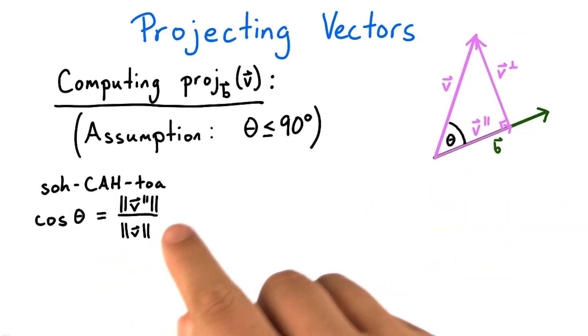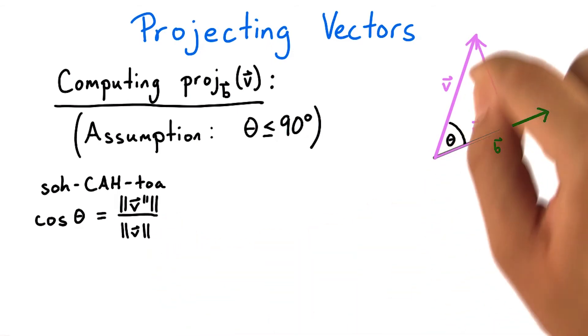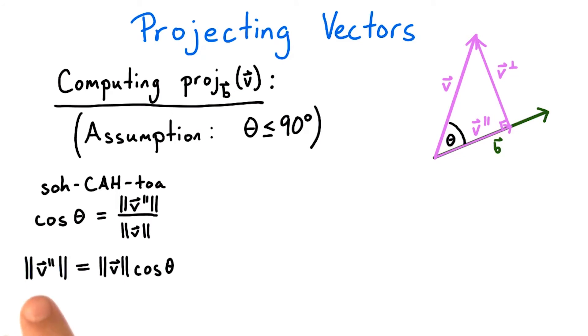After some rearranging, that means that the length of v parallel is the length of v times the cosine of theta. Now we're going to use our dot product formula from earlier.